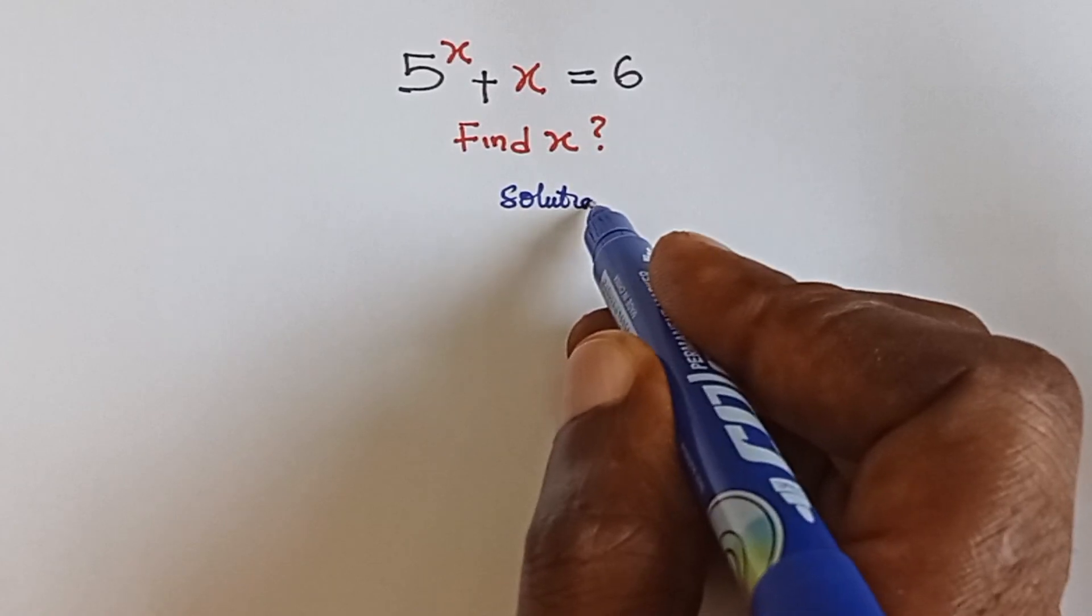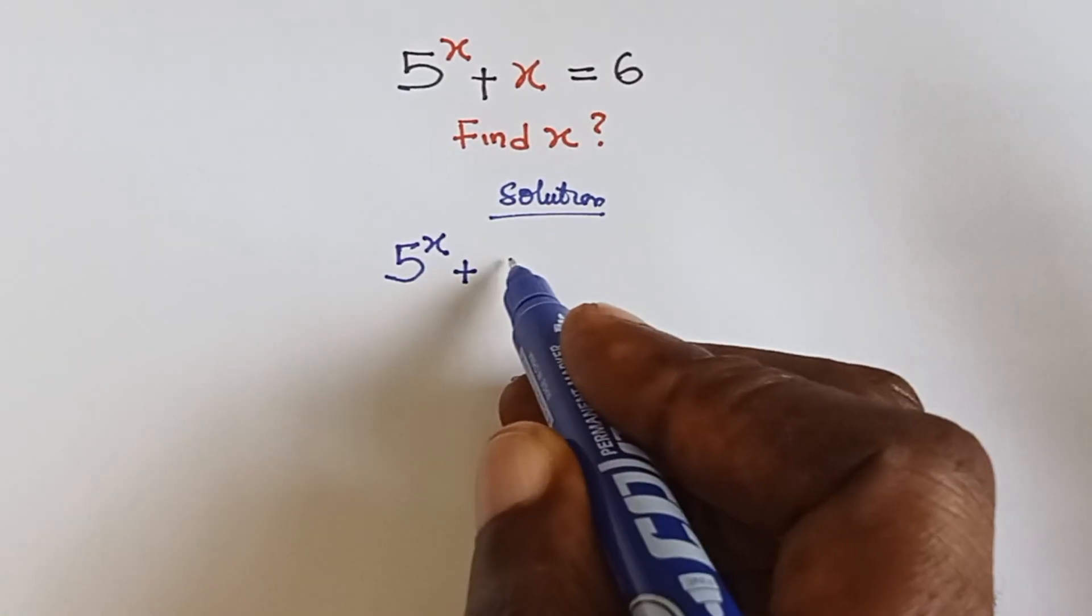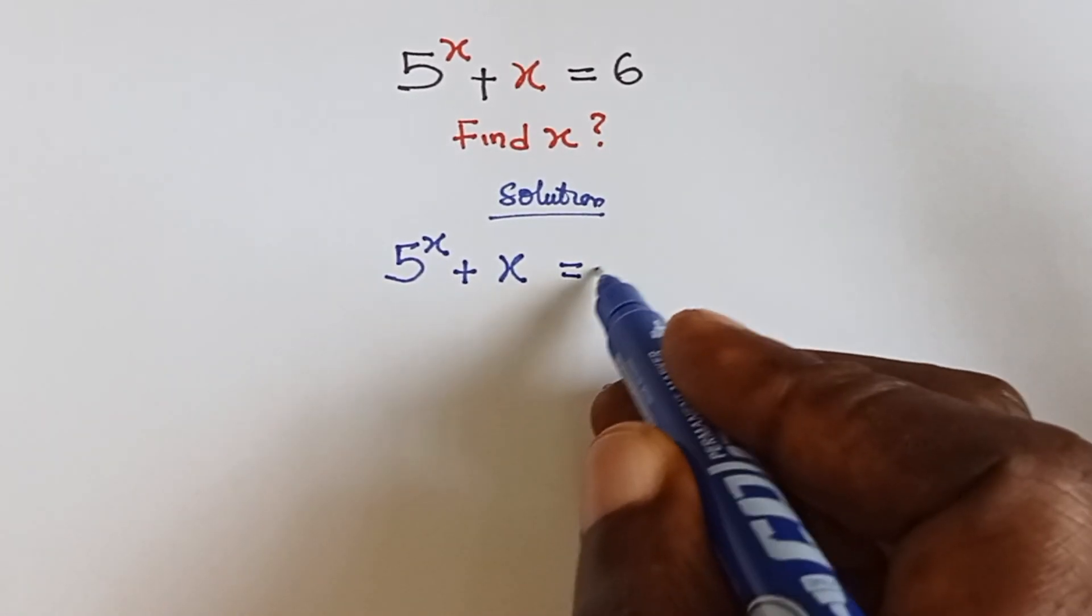Solution. Okay, we have 5 raised to the power x plus x equals 6.